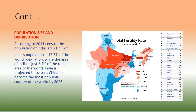Let us study population size and distribution. According to the 2011 census, the population of India is 1.21 billion. India's population is 17.5% of the world population, while the area of India is just 2.4% of the total area of the world. India is projected to surpass China to become the most populous country of the world by 2025.